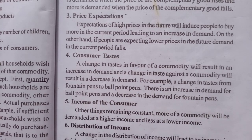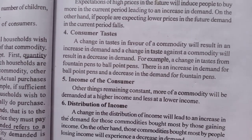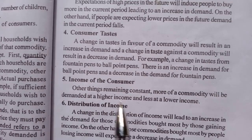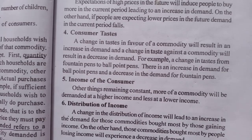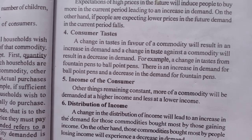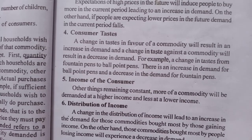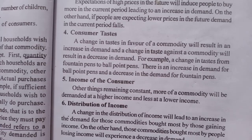The fifth determinant is income of the consumer. Other things remaining constant, more of a commodity will be demanded at a higher income and less at a lower income.